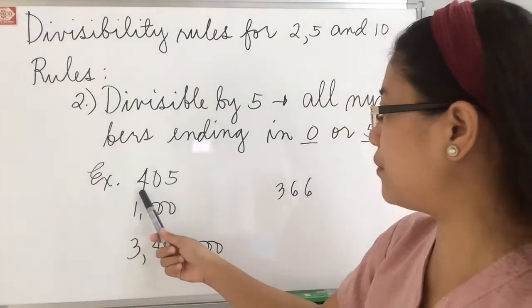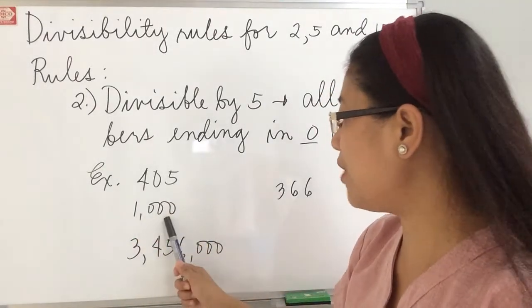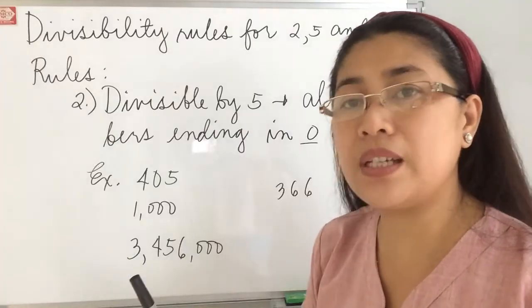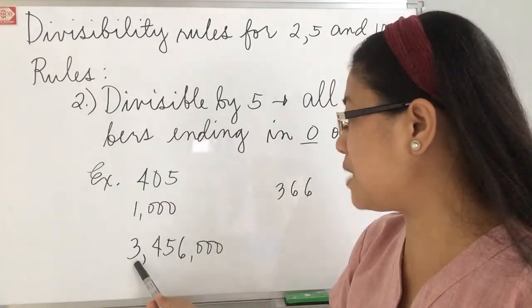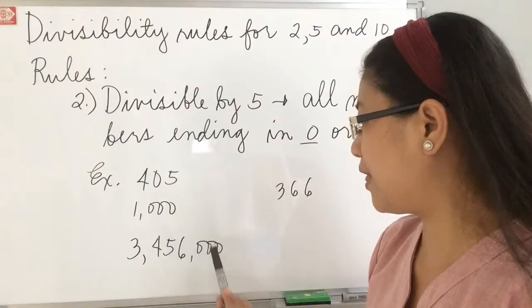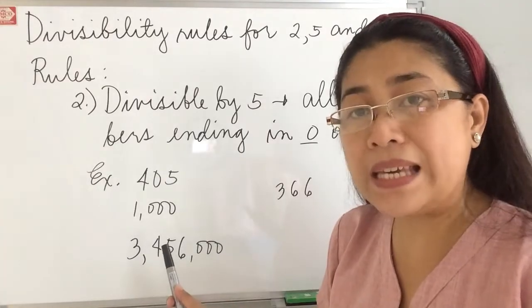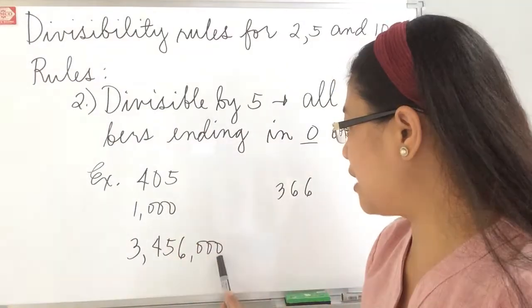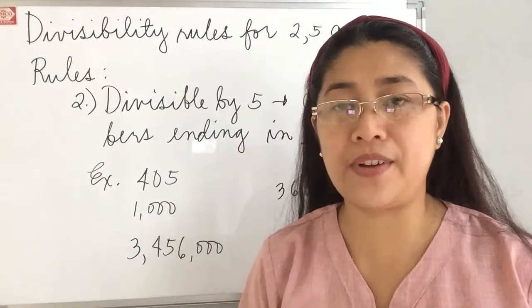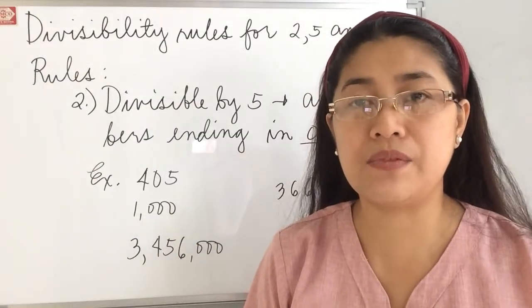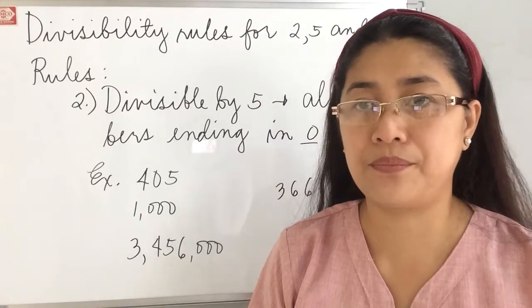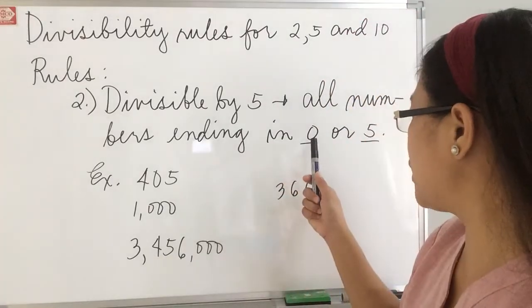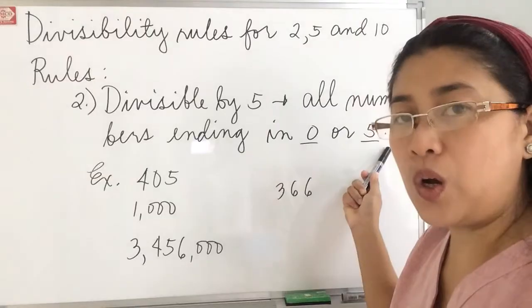For example, we have 405, 1,000, or even a large number which is 3,456,000. So just by looking at the one's digit—5, 0, and 0—you can easily identify if a certain number is divisible by 5, if it ends with 0 or 5 only.